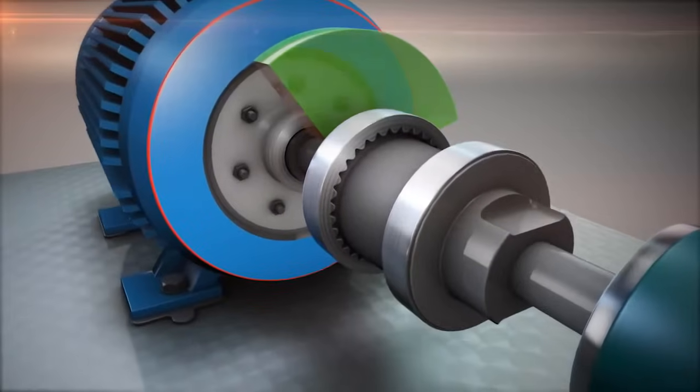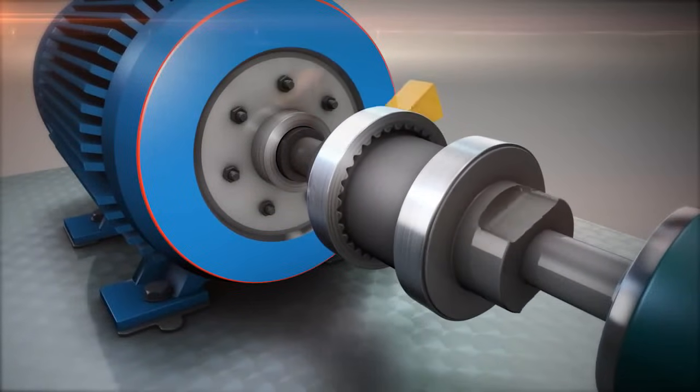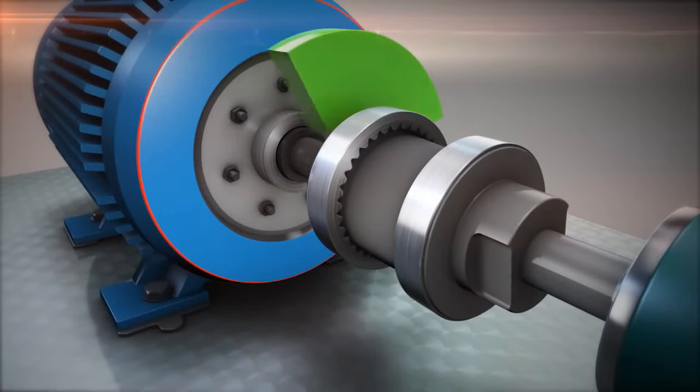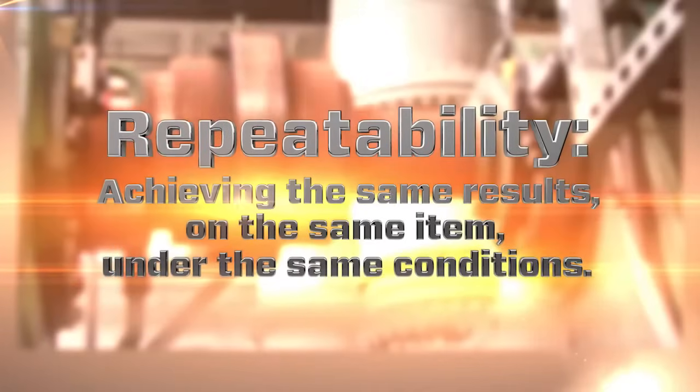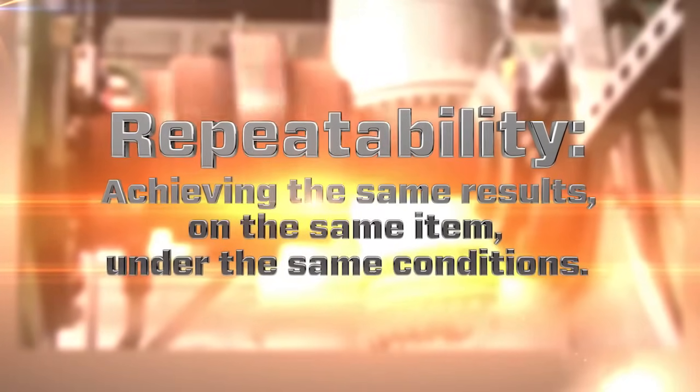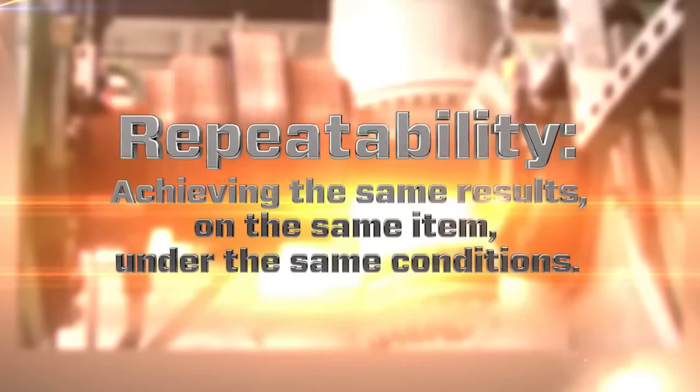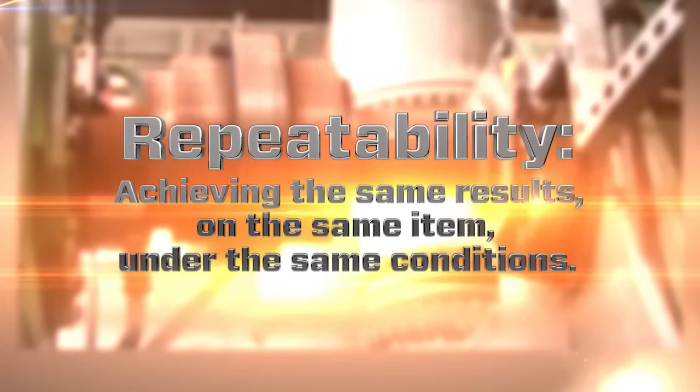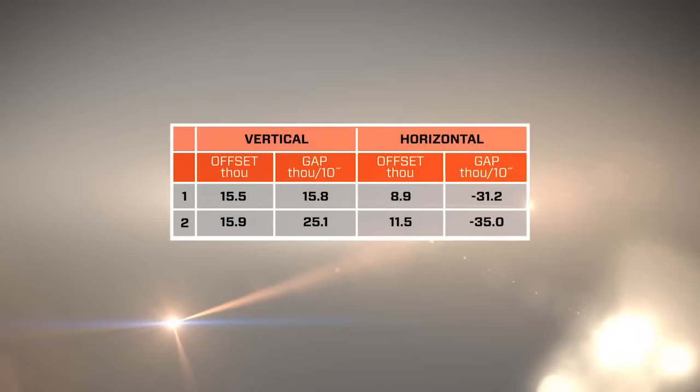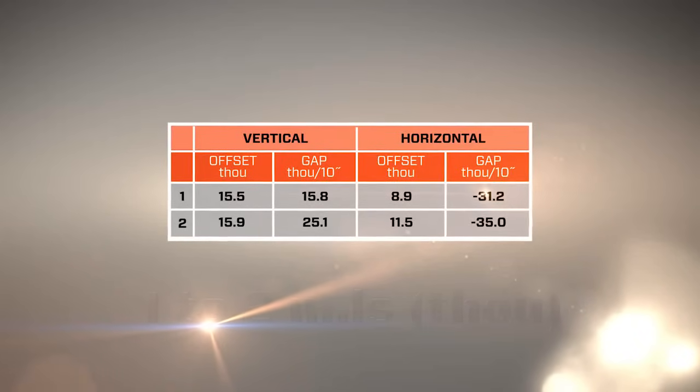This way, we make sure that the needed alignment corrections are precise. We call this repeatability. It means achieving the identical measurement results in the same way, on the same machine, under the same conditions. A measurement table helps to keep track of these measurements.